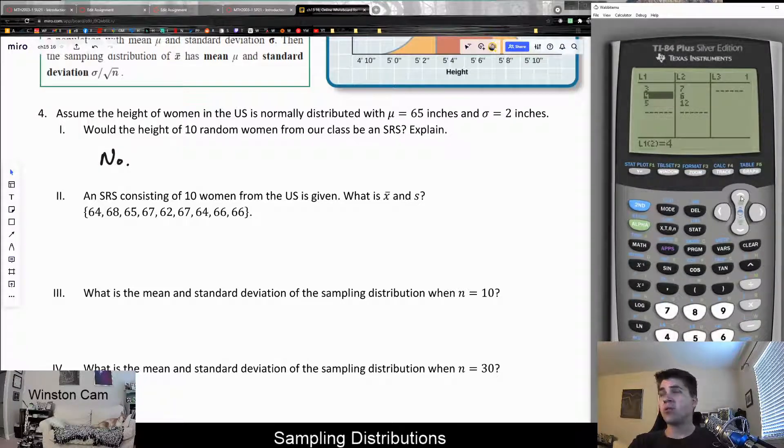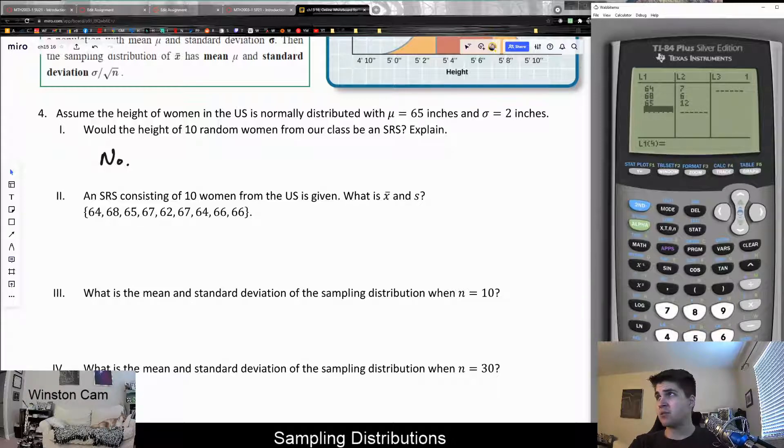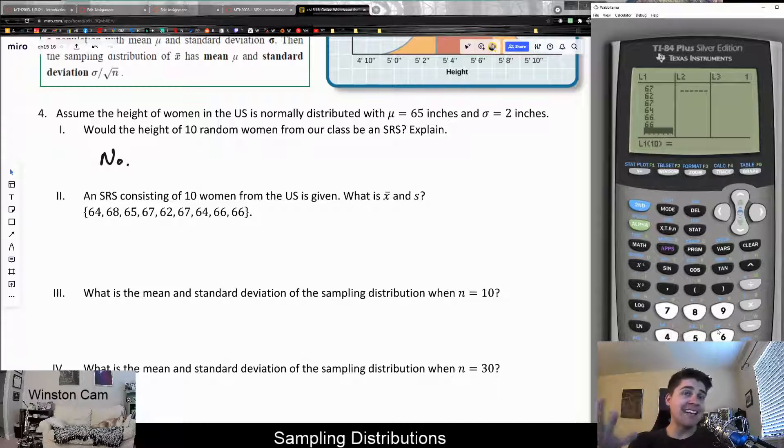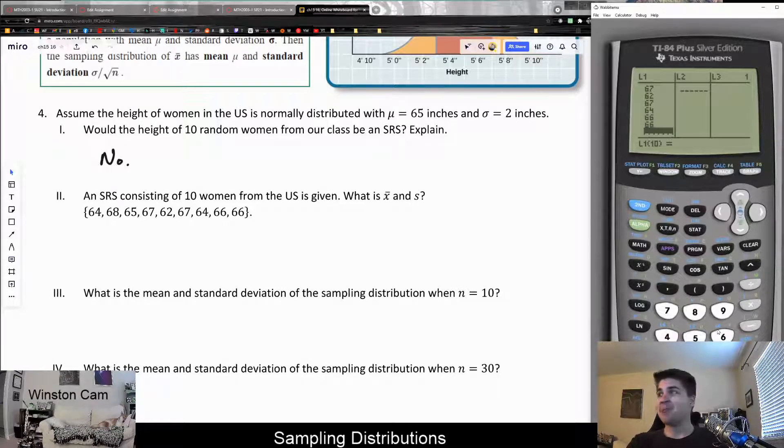You can access a lot of this from this button right here, the stat button, or you can see above it is list. If you click stat, the very first option is edit. And what this will do is it will actually edit the lists in your calculator. And notice when I go into here, I see L1, L2, L3, that basically you can type in lists kind of like you would type data into Excel. Let's go ahead and store all our data in list one. And let's take the sample of 10 women in the U.S. We'll type these in. Basically, 64, enter. If you hit enter, it will drop down to the next list entry. And I'm just going to put all these data points in the first column.